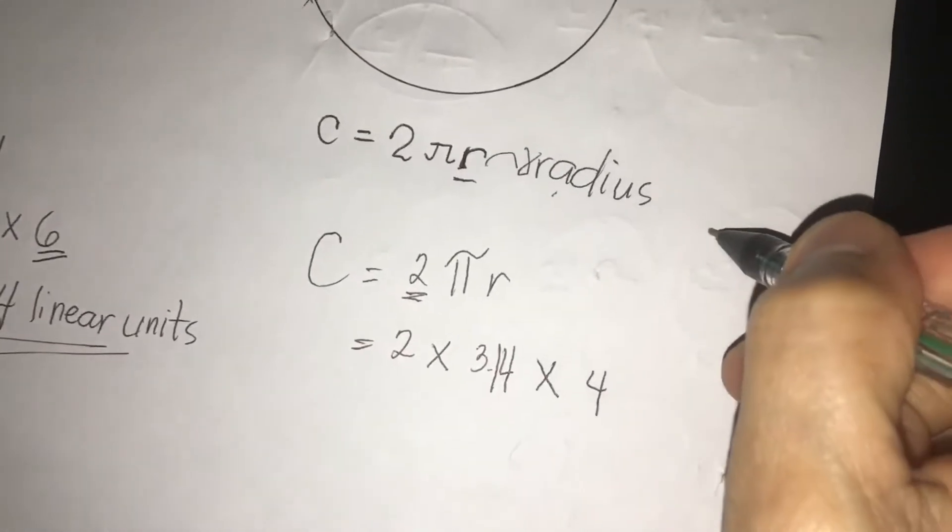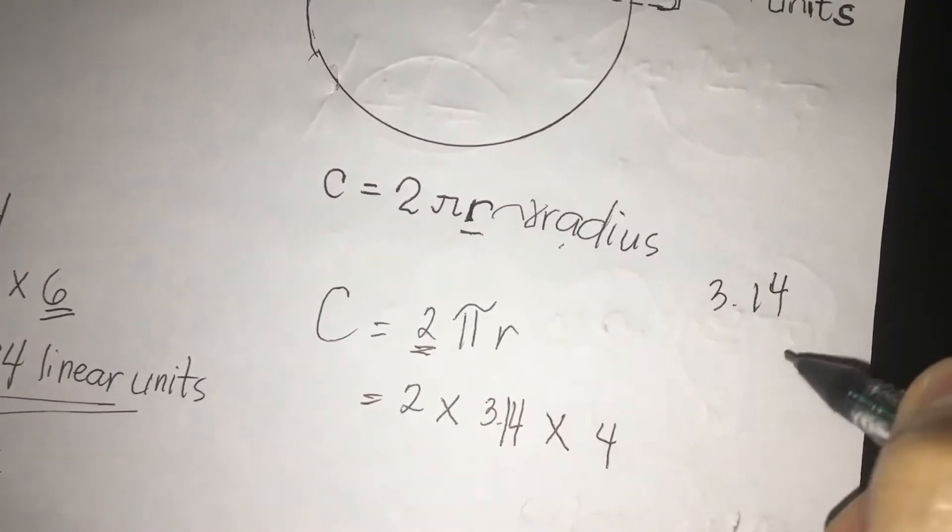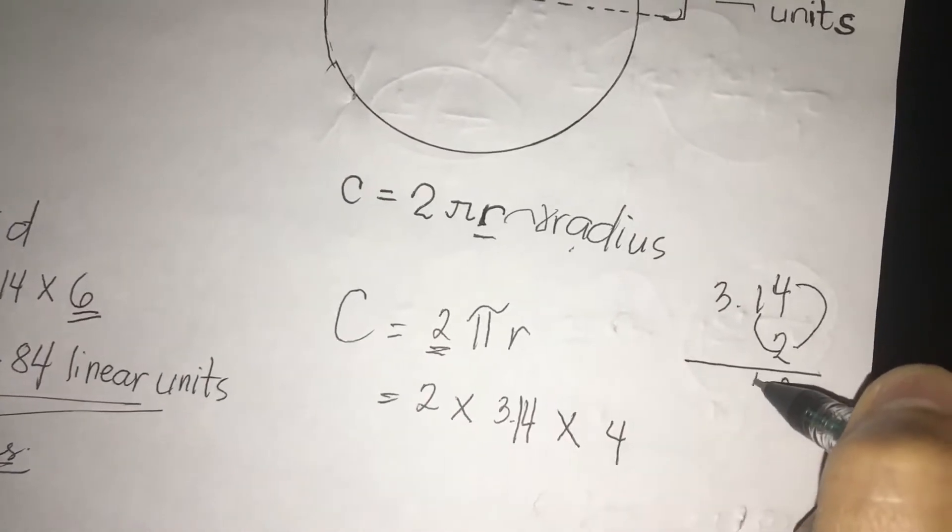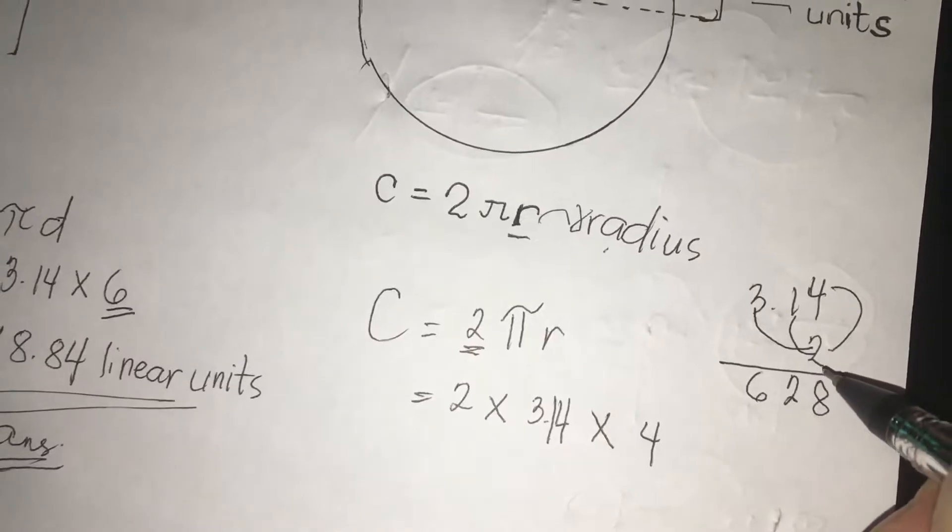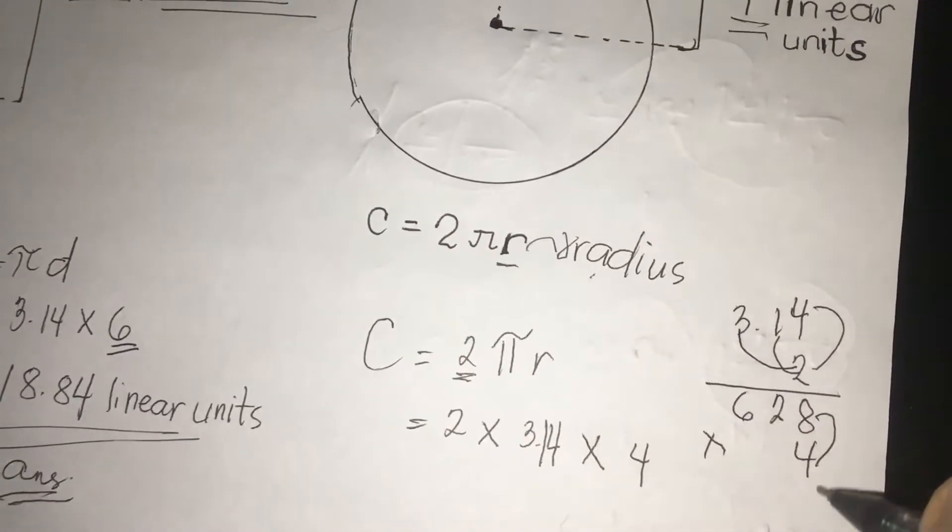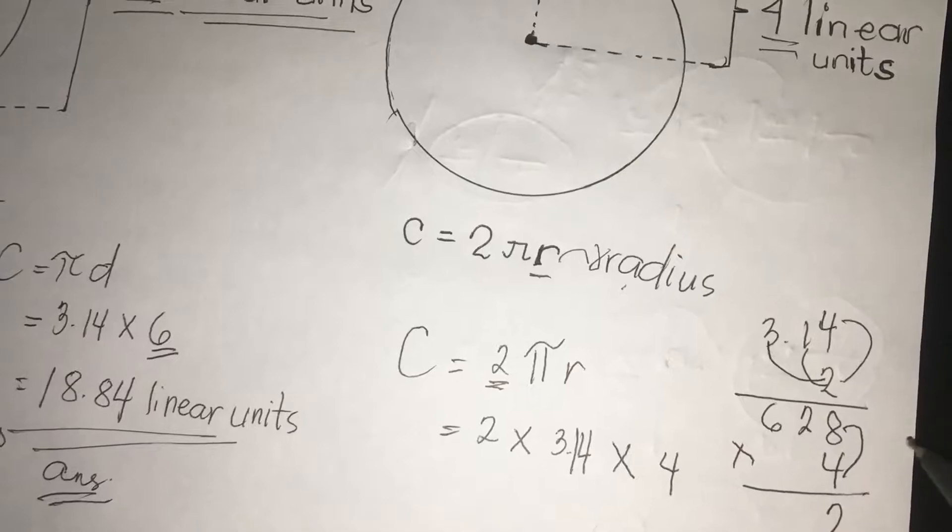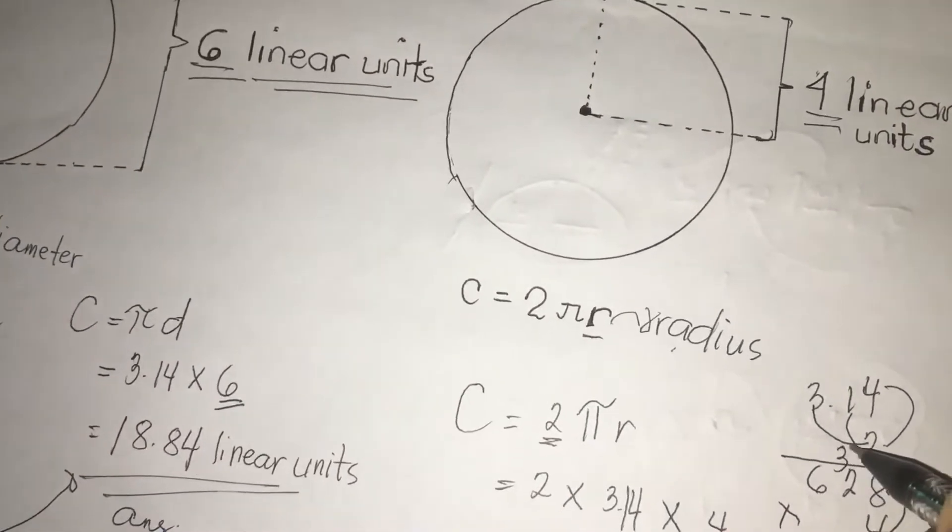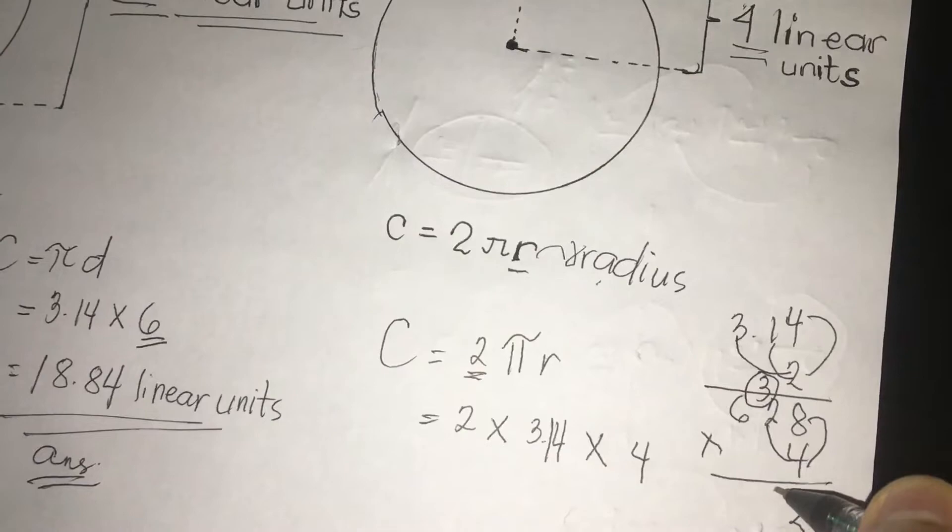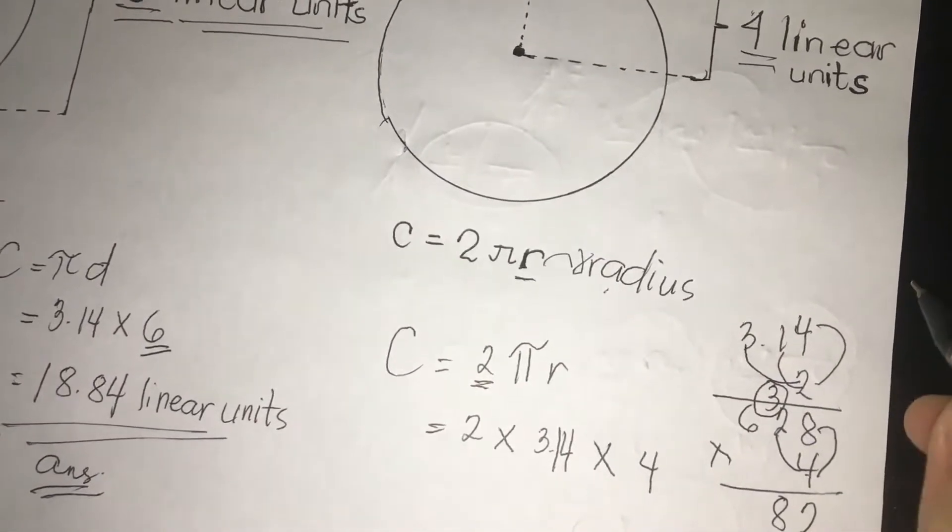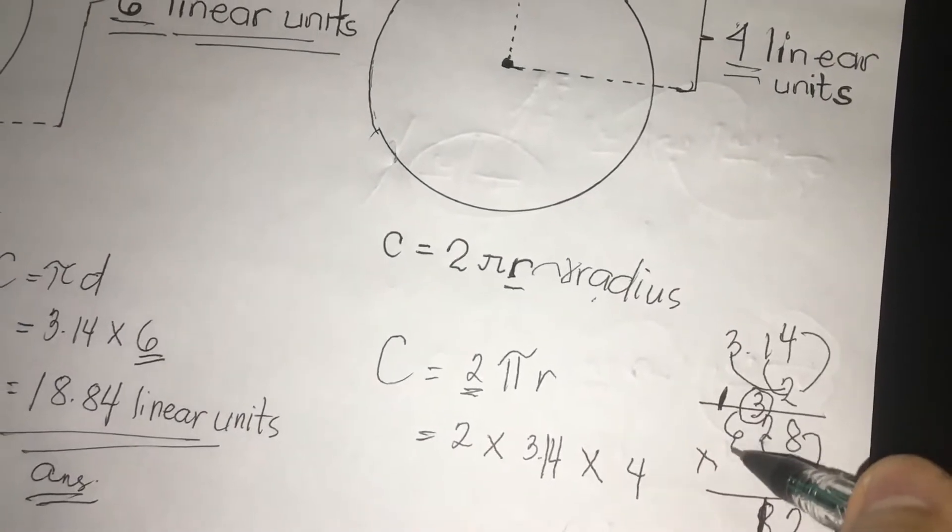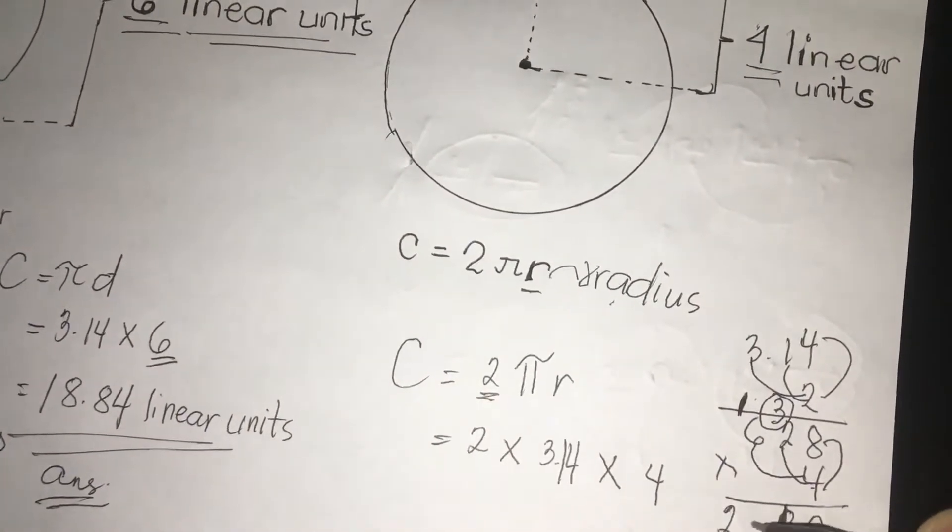We're going to multiply first here 3.14 times 2. 2 times 4, we have 8. 1 times 2, we have 2. 3 times 2, we have 6. Next, we have 8 times 4, 32. We are going to regroup 3 here. Next, we're going to multiply 2 times 4. The answer is 8. So don't forget 3, 8, 9, 10, 11. So this is 11. So regroup 1. Next, 6 times 4 is 24 plus 1 is 25.